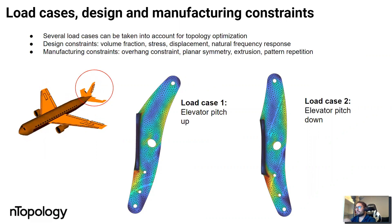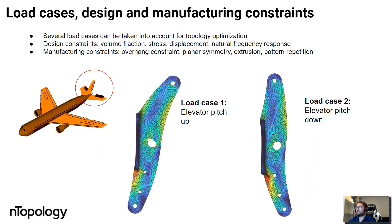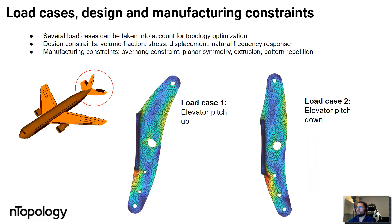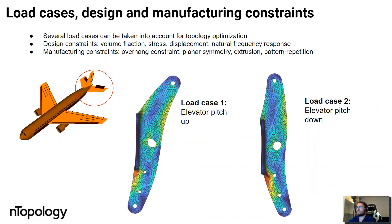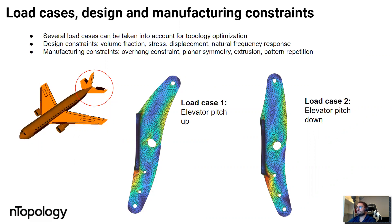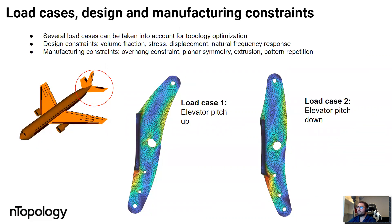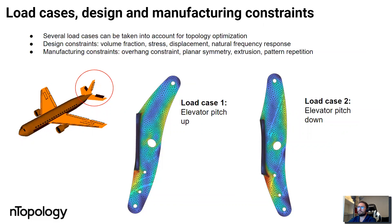We can take those two load cases into consideration when launching a topology optimization, as well as design constraints or manufacturing constraints, such as the overhang constraint, to minimize support material during the print process.